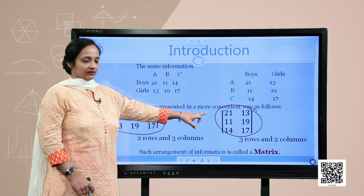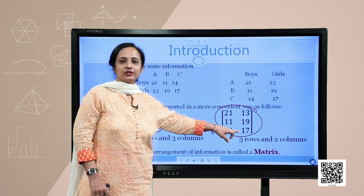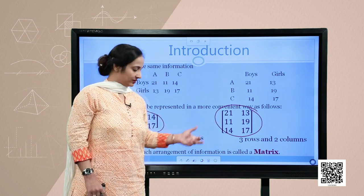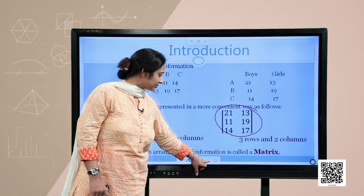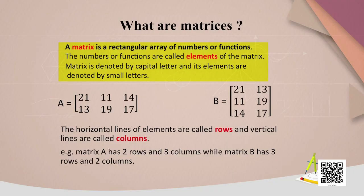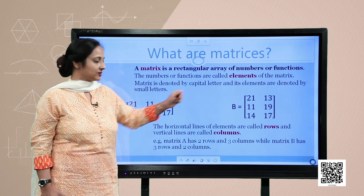These two matrices — in the first case you have two rows and three columns, in the second case you have three rows and two columns — both are representing matrices. So we can say that such an arrangement of information is also called a matrix. A matrix is a rectangular array of numbers or functions. The numbers or functions are called elements of the matrix. A matrix is denoted by a capital letter and its elements are denoted by small letters, like matrix A and matrix B.